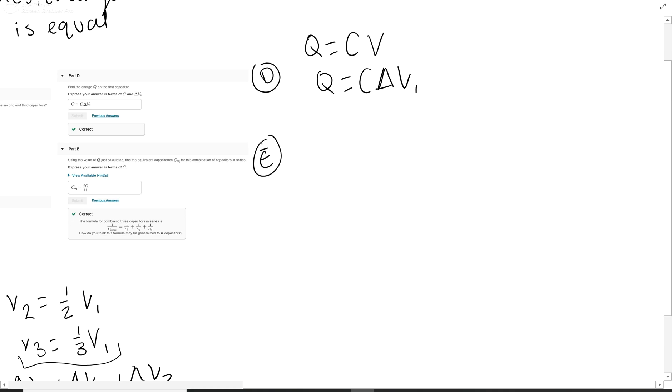Now we're moving to part E. Using this value of Q, find the equivalent capacitance for the combination of capacitors in a series. So what you need to know is 1 over Ceq in a series is 1 over C plus 1 over C2 plus 1 over C3, which in this case are valued at C, 2C and 3C.